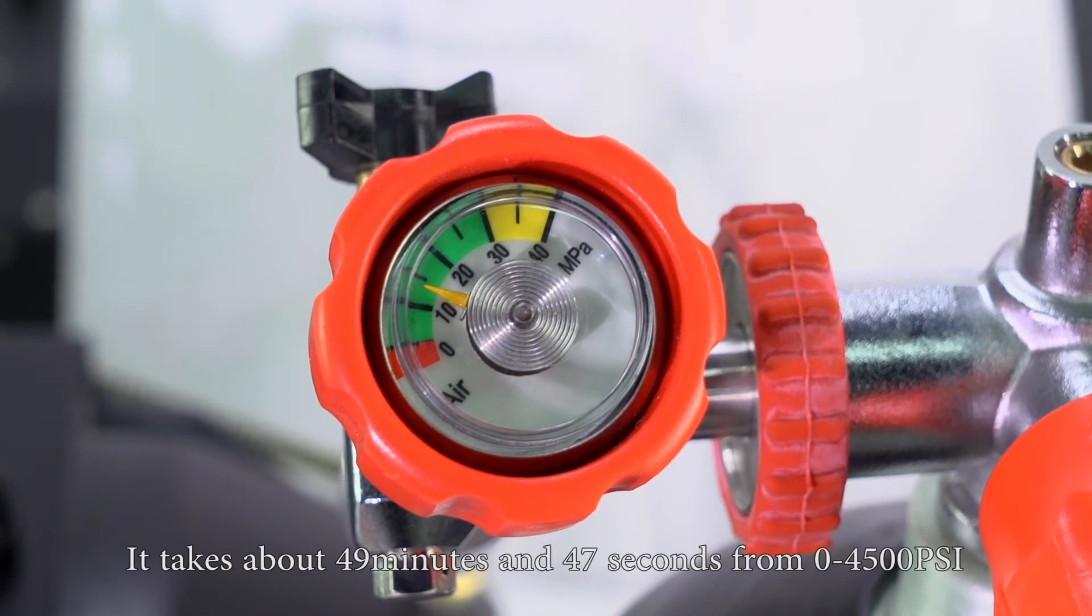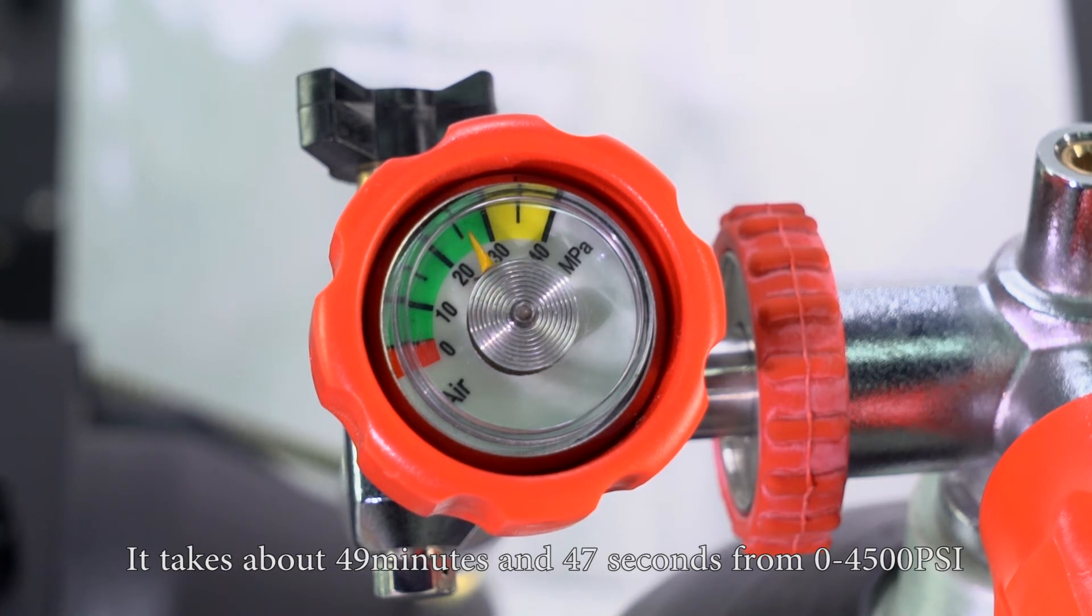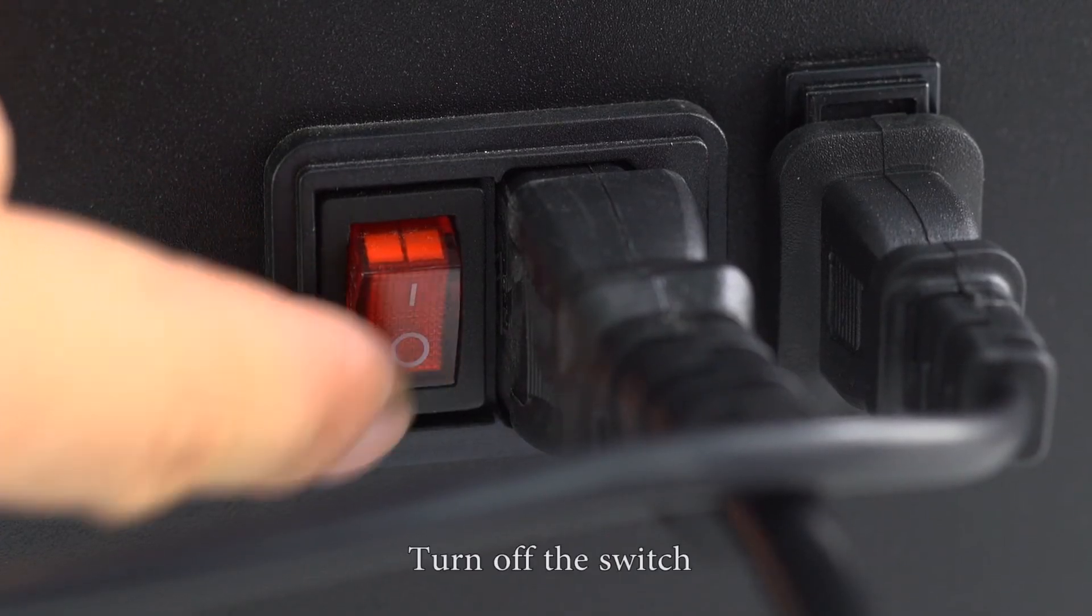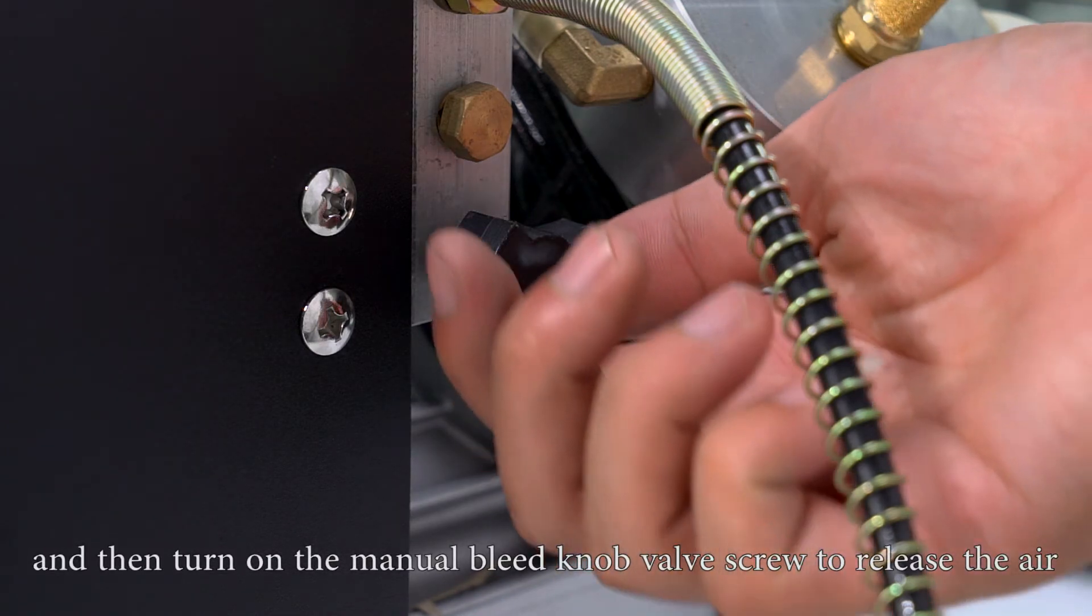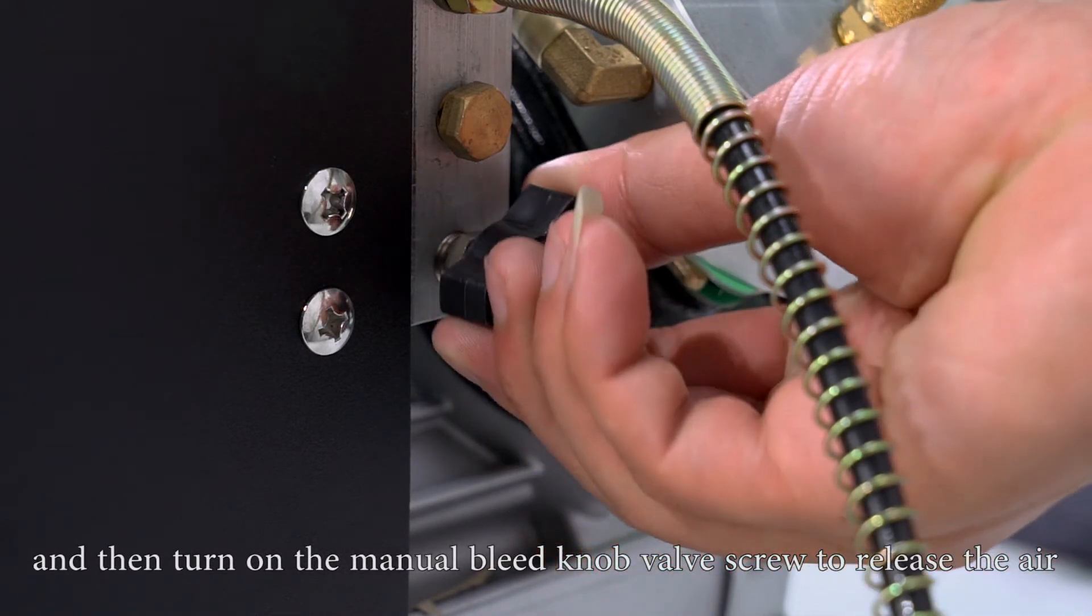It takes about 49 minutes and 47 seconds to go from 0 to 4500 psi. Turn off the switch, then turn on the manual bleed valve screw to release the air.